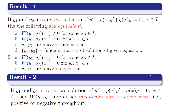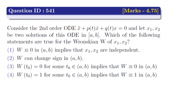Now let us solve the question based upon these results. Option 1: Wronskian is 0 in open interval (a, b) implies x1, x2 are independent — this is false, because we know that if the Wronskian is 0, then x1, x2 are linearly dependent. Option 2 says that W can change sign in open interval (a, b) — this is again wrong, because we know that the Wronskian is either positive throughout the interval, negative throughout the interval, or can be 0, but it cannot change sign. Option 3: the Wronskian at t0 is 0 for some t0 in (a, b) implies the Wronskian is 0 throughout the interval (a, b) — therefore option 3 is correct.